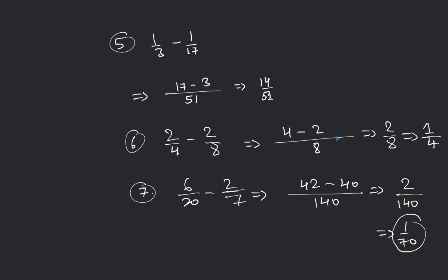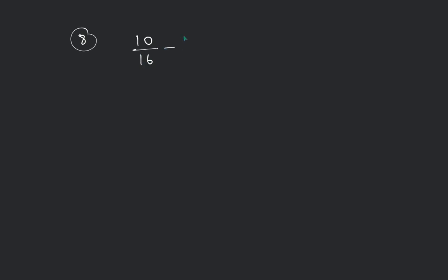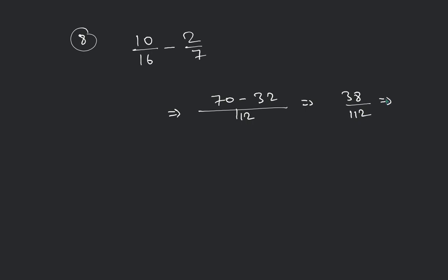Number 8: 10 by 16 minus 2 by 7. We take the LCM first — that will be 16 into 7, which is 112. It will be 7 into 10 = 70 minus 16 into 2 = 32. That will be 70 minus 32 = 38. 38 by 112 — divide by the common factor 2: 38 by 2 is 19, and 112 by 2 is 56. So 19 by 56 will be your correct answer.